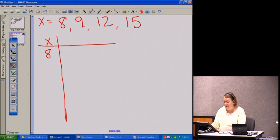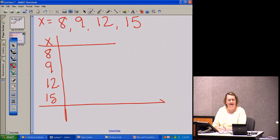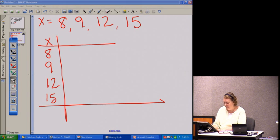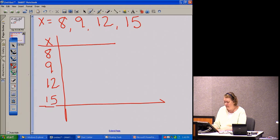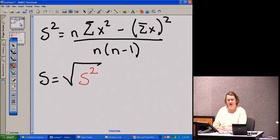I'm going to put my numbers in a table. I'm going to write x here and I'm going to put my numbers down a list. It also helps to put your numbers in order. I'm going to draw a bar here to show that that's the end of my list. The first item in my formula is n. n is the number of items in my list. n is 4.